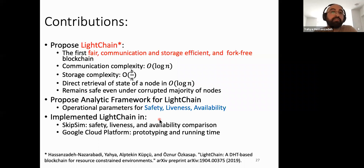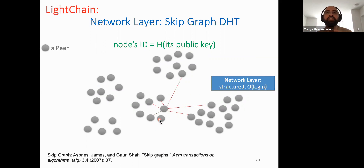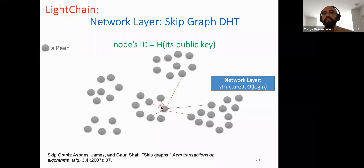In Lightchain, starting from the network layer, we establish the blockchain over a distributed hash table — specifically a skip graph-based DHT. In a DHT, every node knows a few other nodes based on some formulation, and those neighbors are logarithmic in number: in a system of N nodes, a node knows only O(log N) nodes. Using those, every node can deterministically search for every other node in the system.